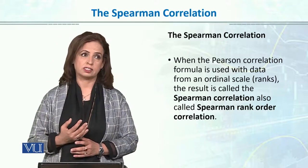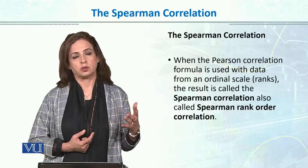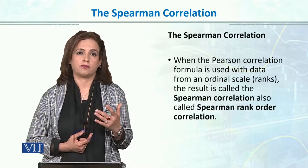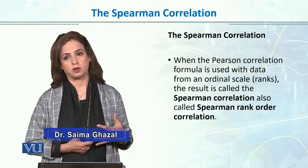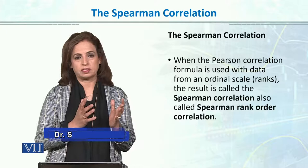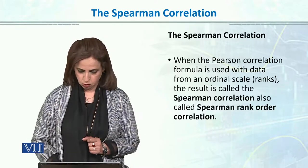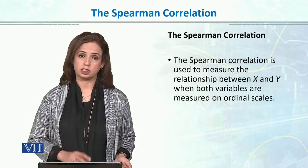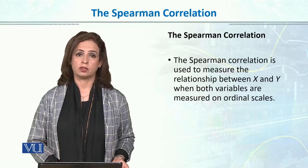There are conditions for using Spearman. For example, in a class it is easier to give students continuous scores, then rank them in terms of intelligence, leadership, or top 10 students. So when the researcher has ordinal rank data, Spearman Correlation is used to measure the relationship between X and Y when both variables are measured on the ordinal scale.